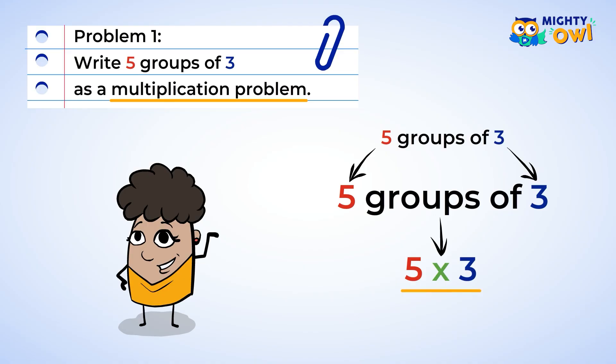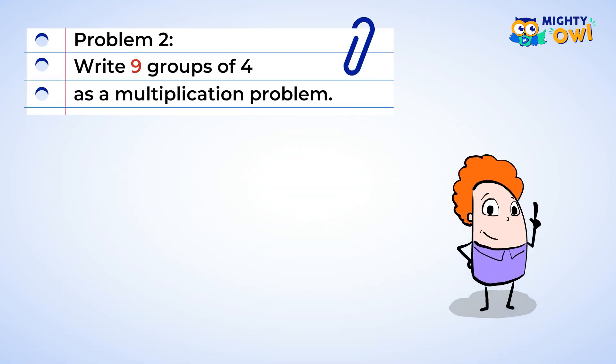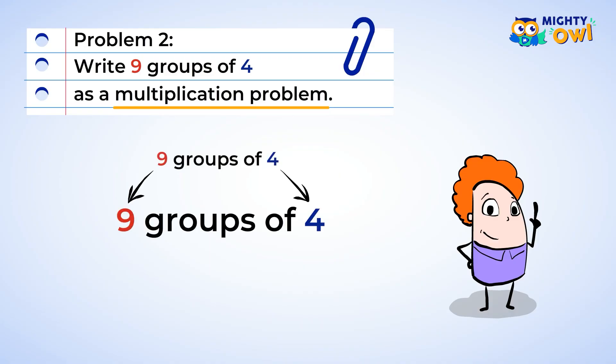Here's another practice problem. You're being asked to write nine groups of four as a multiplication problem. Just like you did earlier, start by changing the words into numbers. Finally, you can turn the words 'groups of' into the multiplication symbol. You did it! You changed nine groups of four into nine multiplied by four.